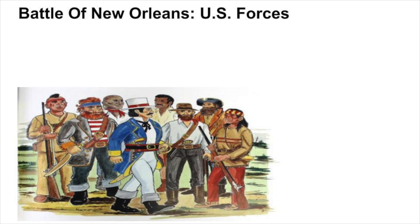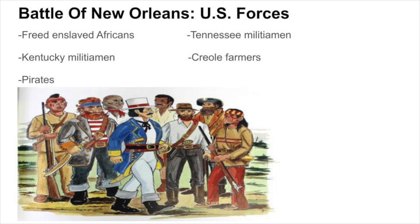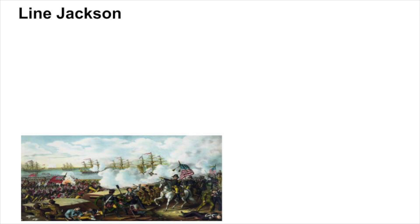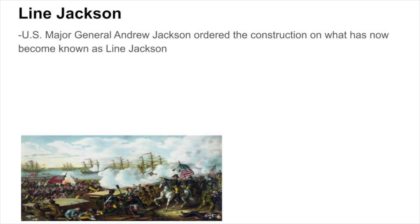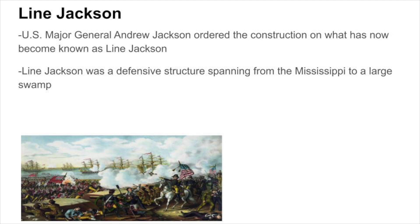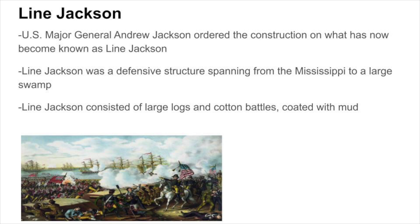These 4,000 men came from a variety of different backgrounds — freed enslaved Africans, Kentucky militiamen, pirates, Tennessee militiamen, and Creole farmers all came to the defense of the city. In order to properly defend the city, Jackson ordered construction on what has now become known as Line Jackson. Line Jackson was a defensive structure spanning from the Mississippi to a large swamp. The structure consisted of large logs and cotton bales coated with mud, and defended both U.S. forces as well as U.S. battery cannons.